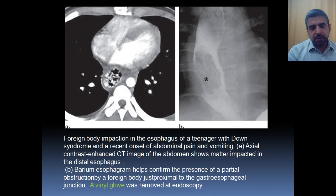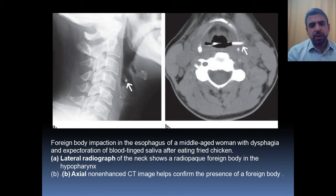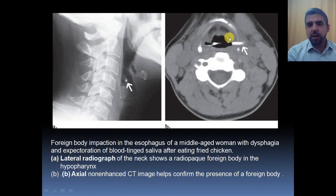This is a middle-aged woman with dysphagia after eating fried chicken. The lateral cervical X-ray shows a bone within the hypopharynx, and on the CT scan the bone is clearly seen on the left side of the laryngopharynx.